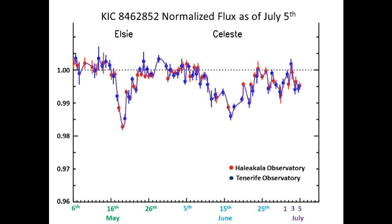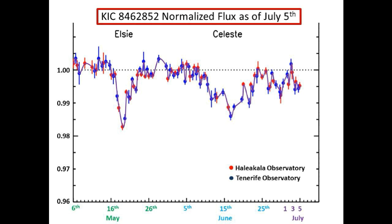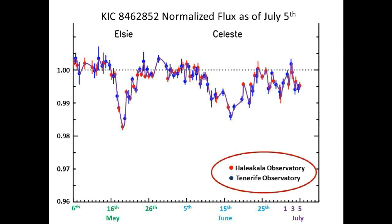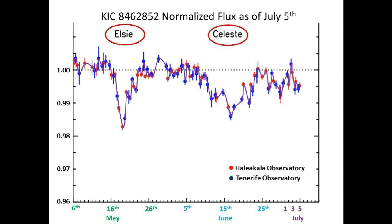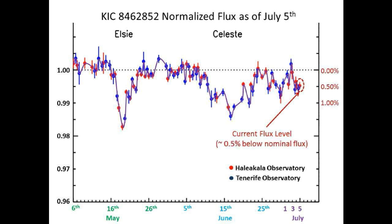This is the normalized flux graph of Tabistar provided by Dr. Boagian. We fixed it up a little for easier viewing. It consists of data from two observatories on opposite sides of the globe — one in Hawaii and one in Spain. What you see circled at the top are the names Tabistar's team gave to the last two dips. And what's circled in red is the current flux measurement of Tabistar — it looks like we dropped a little and are at approximately 1.5% below nominal flux levels.